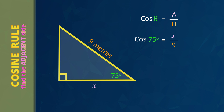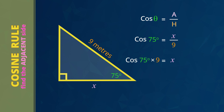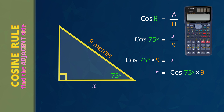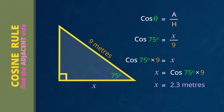Now we want to find the length of the adjacent side — that's X. Right now X is divided by 9, so to get X by itself, multiply both sides of the equation by 9. That cancels out the divide by 9 and leaves X by itself. We write X on the left side and the working on the right side: X equals cos 75 multiplied by 9. To save time, we'll do this in one step on the calculator. So cos 75 multiplied by 9 gives the answer of 2.3 meters. That means in this part of the roller coaster, if the angle is 75 degrees and the slope length is 9 meters, the horizontal length is 2.3 meters.